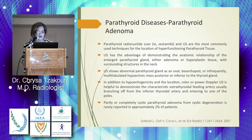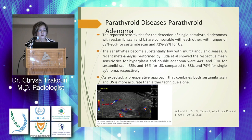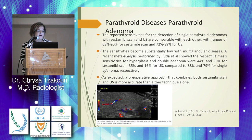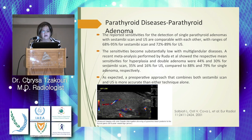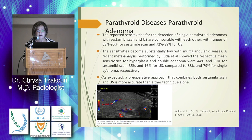Partly or completely cystic parathyroid adenoma from cystic degeneration is rarely reported in approximately 2% of patients. The sensitivity of sestamibi scan ranges from 68-95% and ultrasound from 72-89% for detection of single parathyroid adenomas. Sensitivities become substantially lower with multinodular disease. A recent meta-analysis by Root et al showed mean sensitivities for hyperplasia and double adenoma were only 44% and 30% for sestamibi scan, and 35% and 16% for ultrasound, compared to 88% and 79% for single adenoma respectively. A preoperative approach combining both sestamibi scan and ultrasound is more accurate than either technique alone.